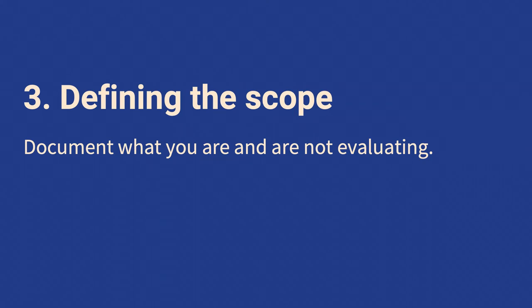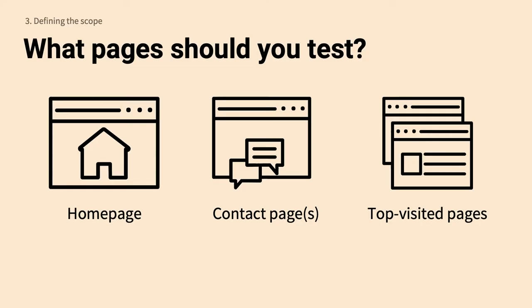When going into accessibility testing, we need to define the scope — what are we testing and what are we not testing? It's likely not possible or needed to check every page on your site. This is where knowing your site's architecture comes in handy. We'll definitely want to evaluate the homepage, any contact pages, and our top-visited pages.